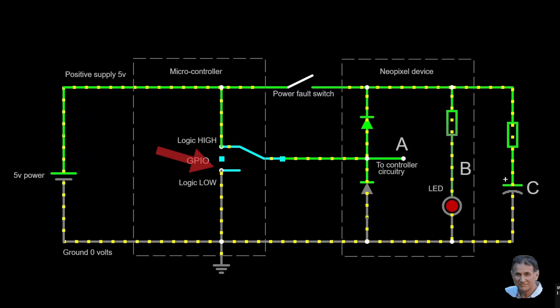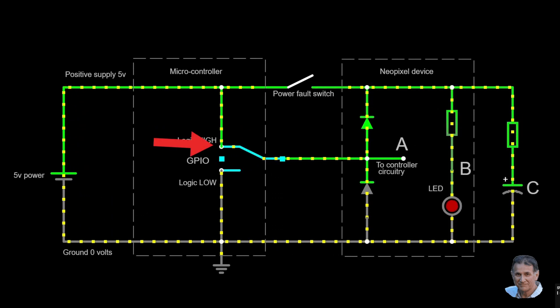So what happens when the GPIO pin swings to a logic low? Well, you'd expect the current to stop, which it does after the capacitor C discharges. The next time the GPIO goes high, the LED gets power and the capacitor recharges.